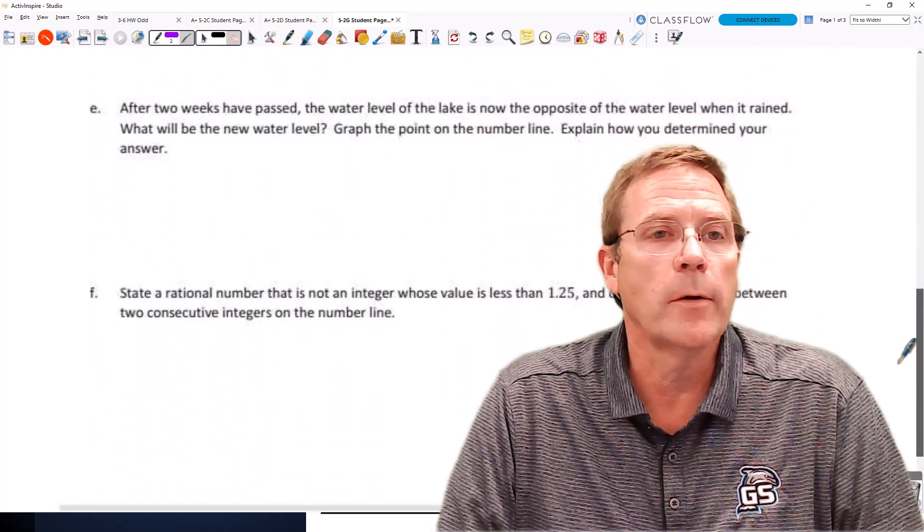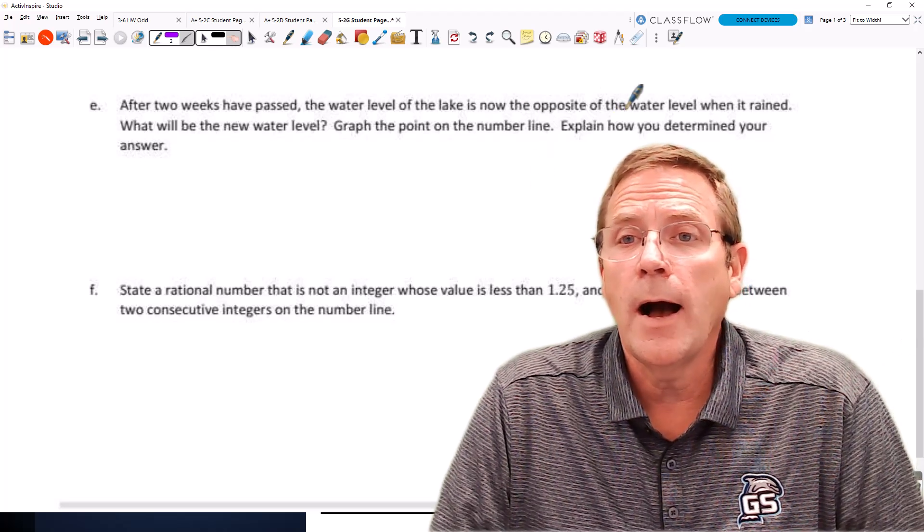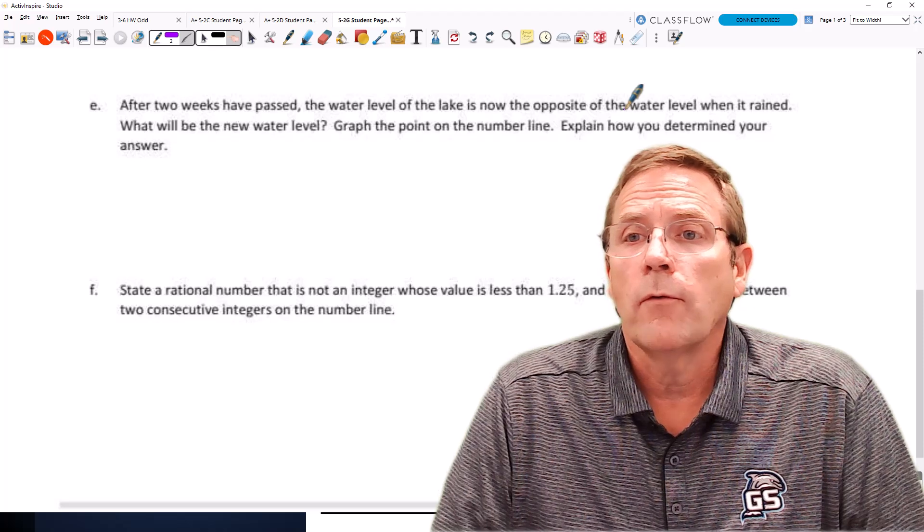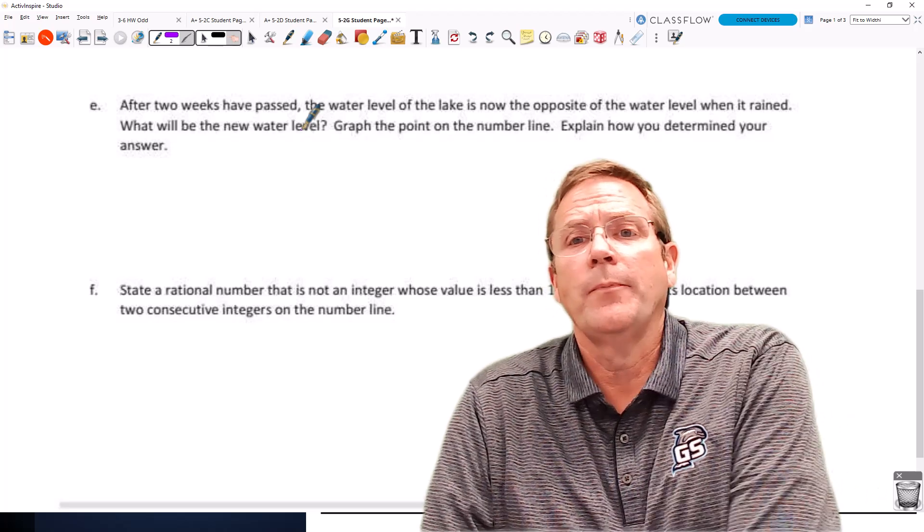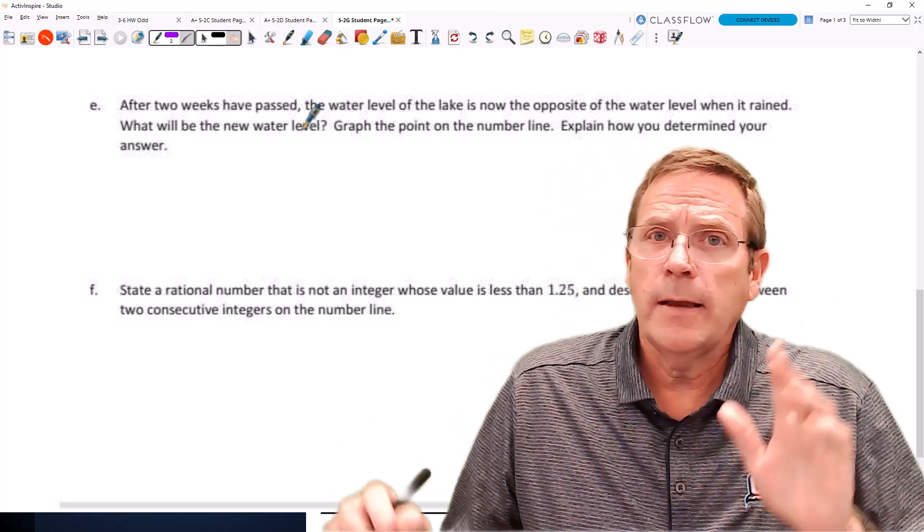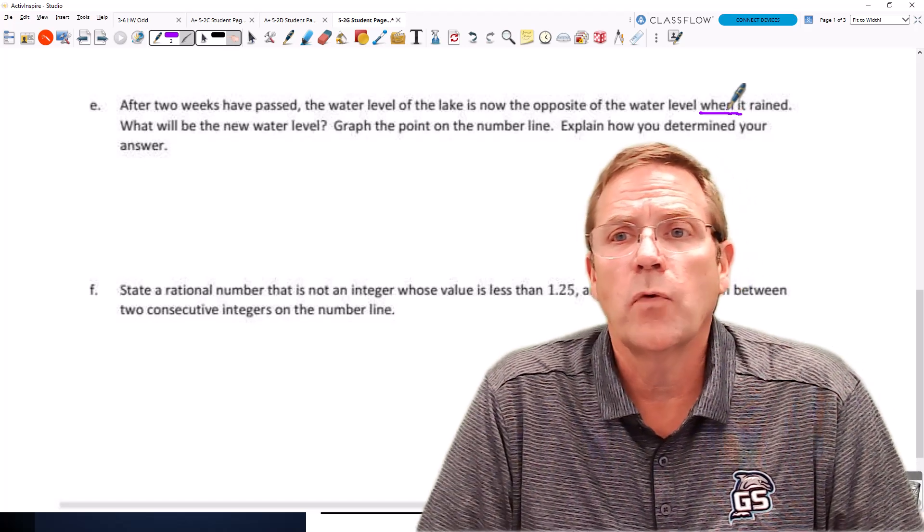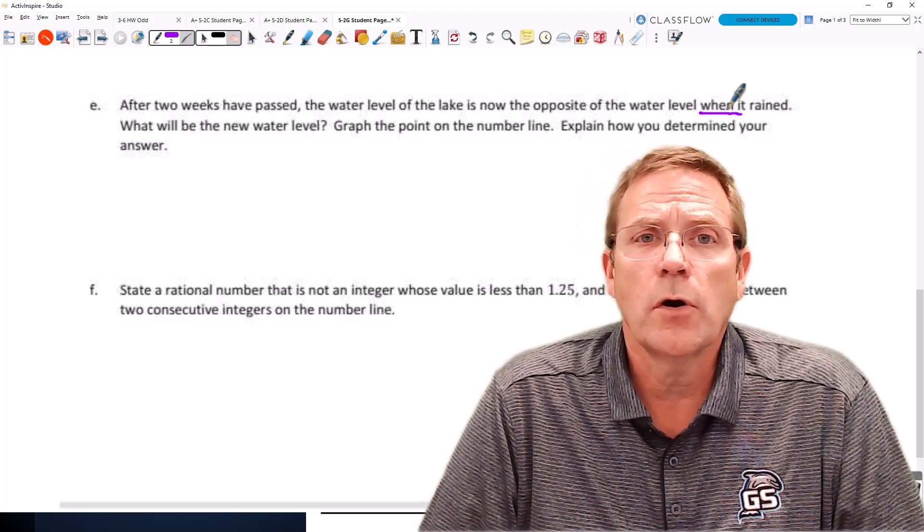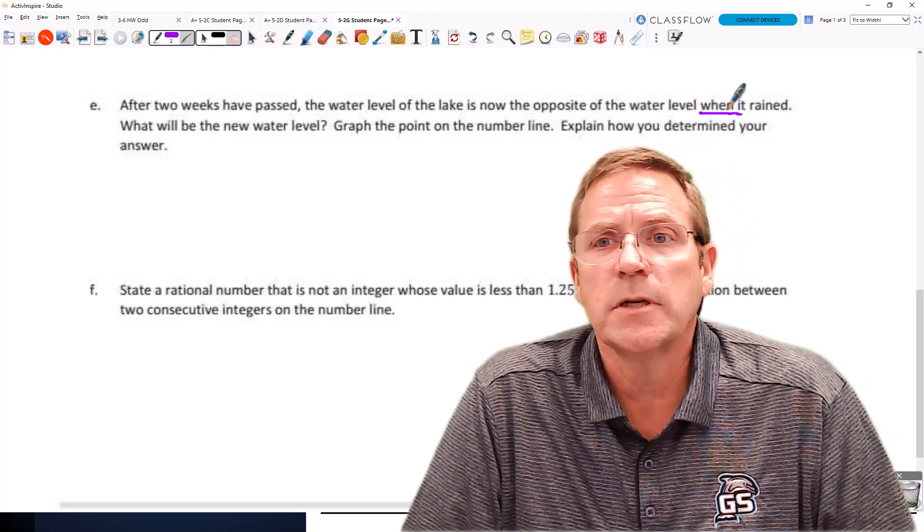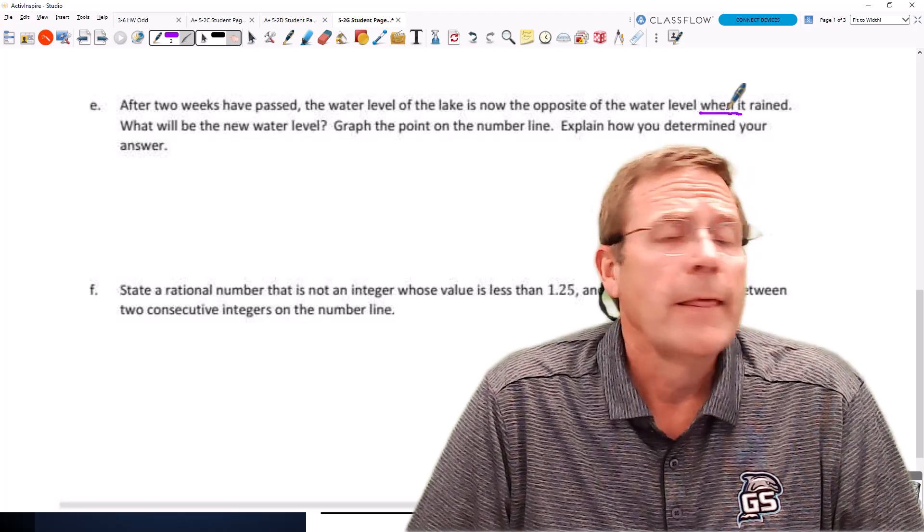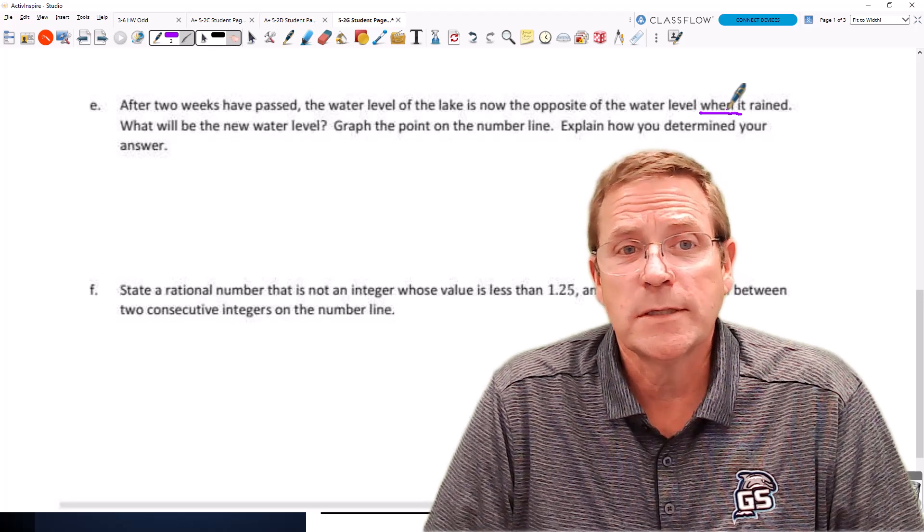It says, after two weeks have passed, the water level of the lake is now the opposite of the water level when it rained. What is the new water level? Now, one thing I don't like is the statement when, because the when implies when the rain started, which means the water level was zero, and the opposite of zero is zero. That's not what we're talking about.